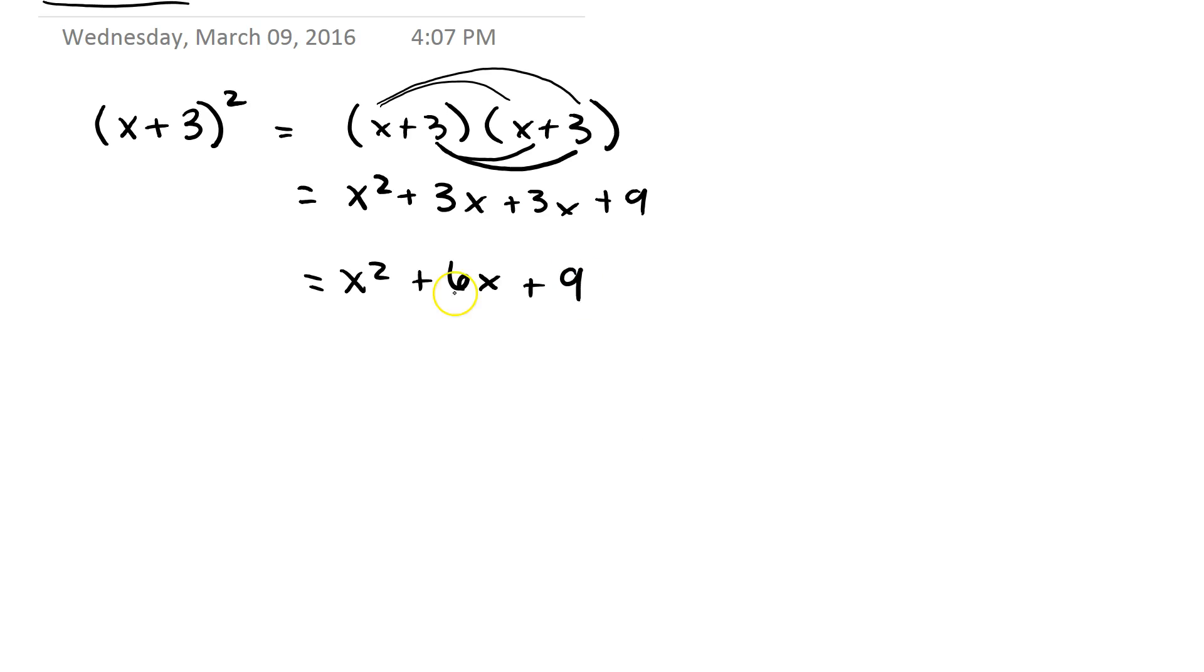We notice a few things when we do this. Every single time—and I've only done one example, but you can make up as many as you want—the b term is 2 times the 3, and this constant term is 3 squared.